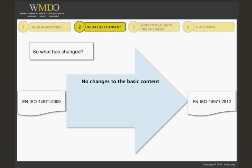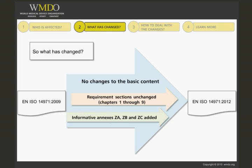So what has basically changed? Let's be clear that there are no changes to the requirements part of the standard. This means that clauses one through nine have not been changed as compared to the previous version. The informative annexes A through J have also not been changed. The new part of the standard is actually the addition of informative annexes ZA, ZB, and ZC. That doesn't sound like a big deal — well, let's take a look at those new annexes.